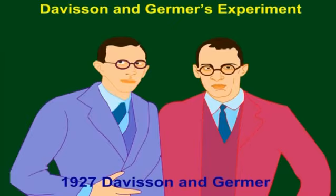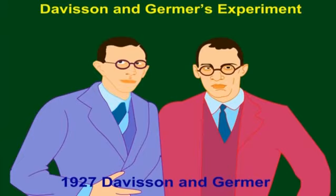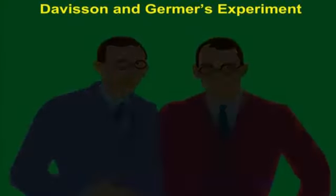Davisson-Germer Experiment. In 1927, Davisson and Germer observed that a beam of electrons obtained from a heated tungsten filament is accelerated by using a high positive potential.